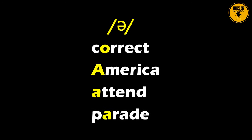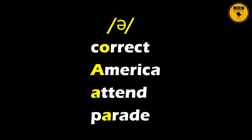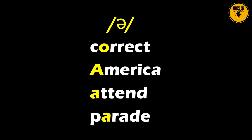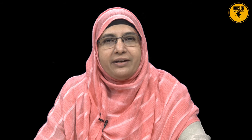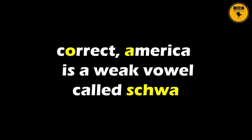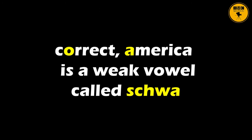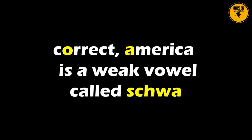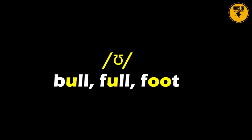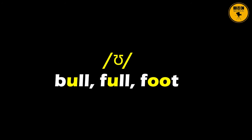Examples: correct, America, attend, parade. This sound that you hear in words like 'correct' and 'America' is a very weak vowel and it is also called a schwa. Let us look at the fifth example of a monophthong: bull, full, foot. This is a short vowel. Please repeat — bull, full, foot.